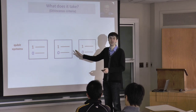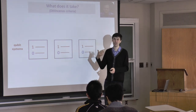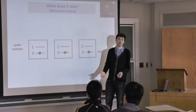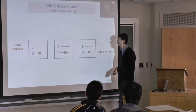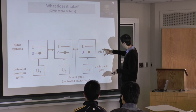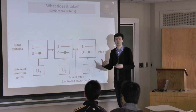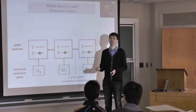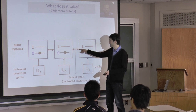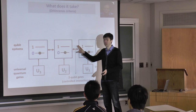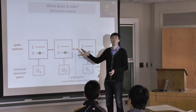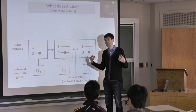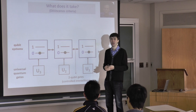We have covered qubit systems — I've shown you several different types of two-level systems that can work as qubits. We have covered that you can always initialize these systems, for example by waiting for the relaxation time until it drops to the ground state. That's a well-defined state. I focused a lot on single qubit gates and single qubit control: Rabi oscillations, Ramsey fringes — those kinds of effects provide universal control over single qubits.